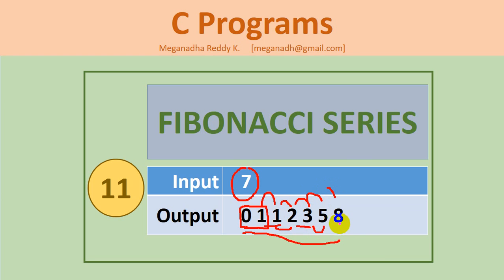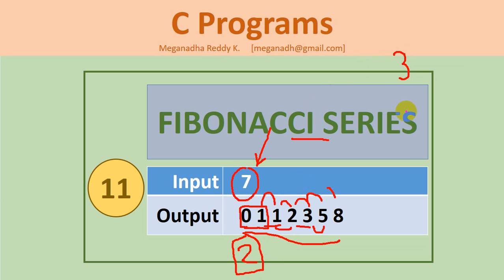And the next term will be five plus eight, which is 13. So like this, we have to write code to get the series based on the input that we get from the user. The default minimum input that is a must for Fibonacci series is two, because we need at least two elements to print a series. If we give the input as three, we need to print 0, 1, 1.